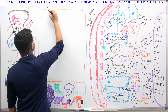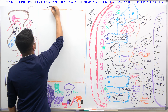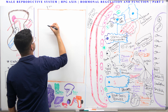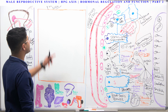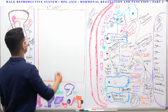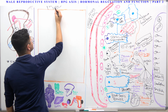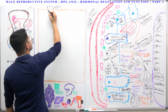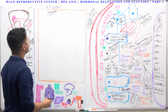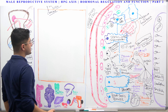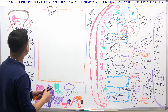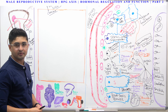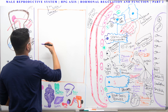The Leydig cell has a receptor called the HDL receptor — it's called the SR-B1 scavenger receptor family. These HDL receptors bring cholesterol into the Leydig cells. Now, this cholesterol has a lot of functions. Remember, cholesterol is a 27-carbon molecule. When the cholesterol comes in, there is a very important enzyme — but it's not located in the cytoplasm; it's located in the mitochondria.